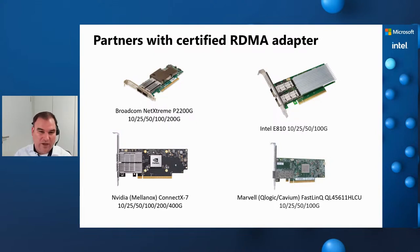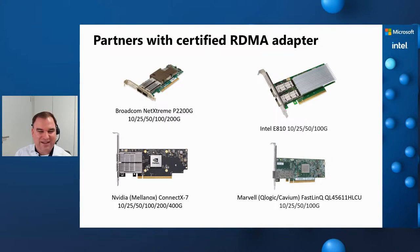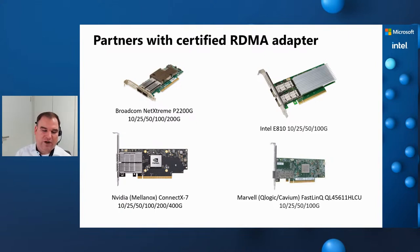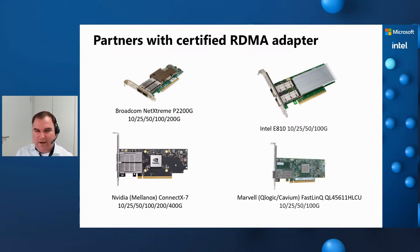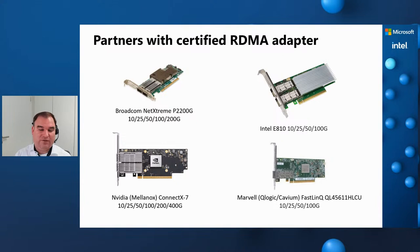On one side we have the RoCE cards, and on the other side the iWarp cards. Both iWarp cards — the Intel E810 and the Marvell — have a big advantage: they support a dual stack. So if you choose the Intel E810, you can also switch from iWarp to RoCE, since the card supports both RDMA options. The Intel E810 was announced around the beginning of 2022, and many Azure Stack HCI certified solutions already offer it as an option.